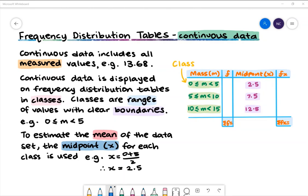Continuous data is displayed on frequency tables in classes. Classes are ranges of values with clear boundaries, for example a variable m is greater than or equal to 0 and less than 5.